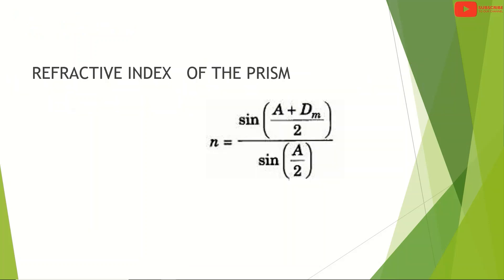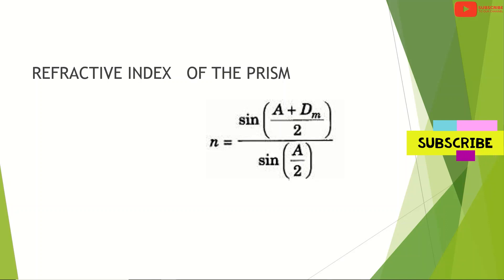The refractive index of the prism is given by: n equals sin((A + dm)/2) divided by sin(A/2), where A is the angle of the prism and dm is the angle of minimum deviation.